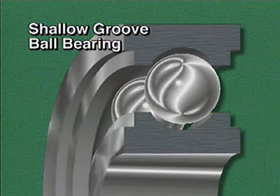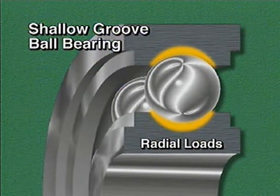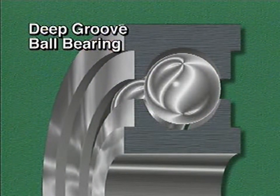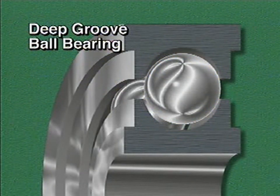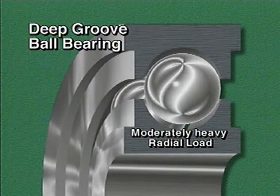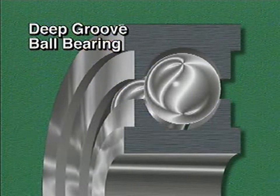This ball bearing is a shallow groove ball bearing. In a shallow groove ball bearing, the inside surfaces of both the inner and outer rings are shallow. This type of bearing is specifically designed to handle radial loads. A deep groove ball bearing is similar to a shallow groove ball bearing except that the inside surfaces of the inner and outer rings are deep. Deep groove ball bearings are designed primarily for moderately heavy radial loads, but they can also handle a small amount of axial load. This type of bearing is also called a Conrad bearing.